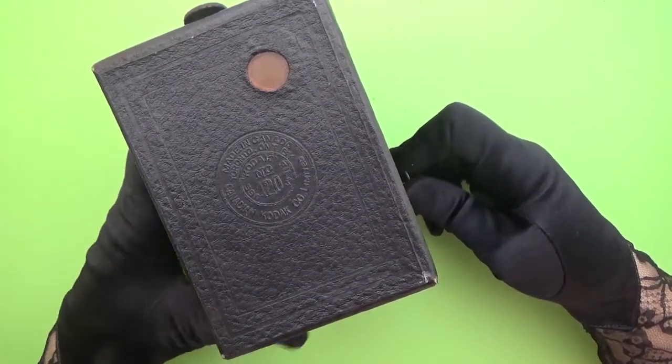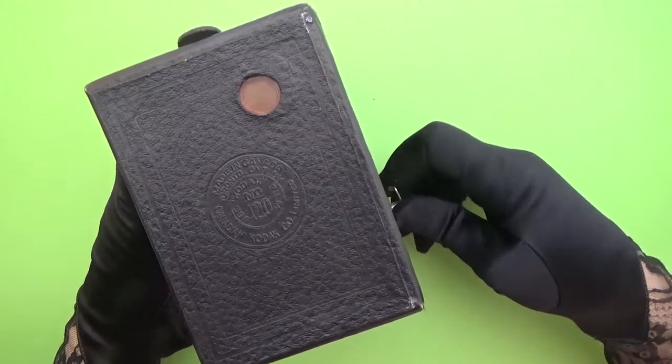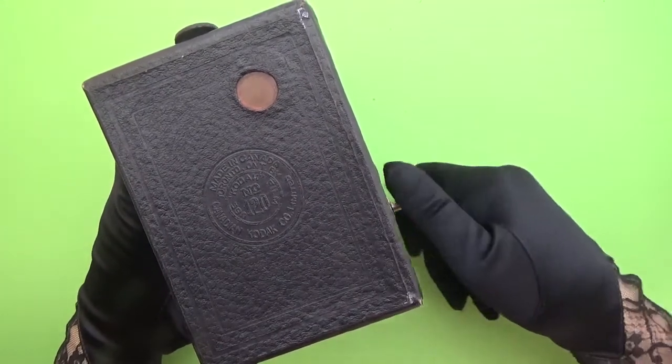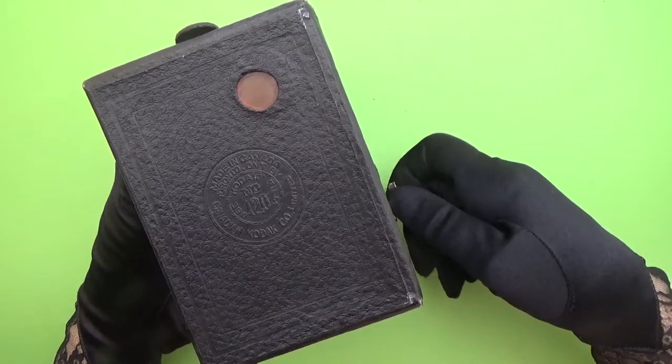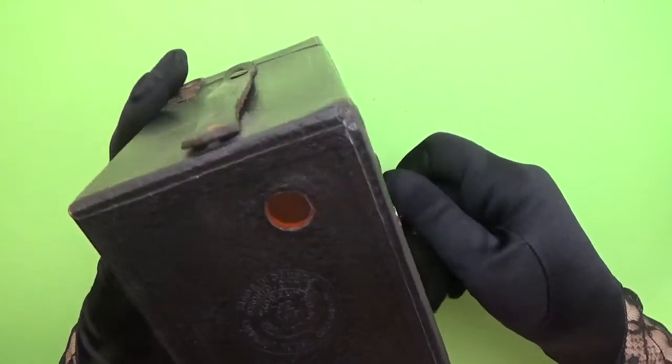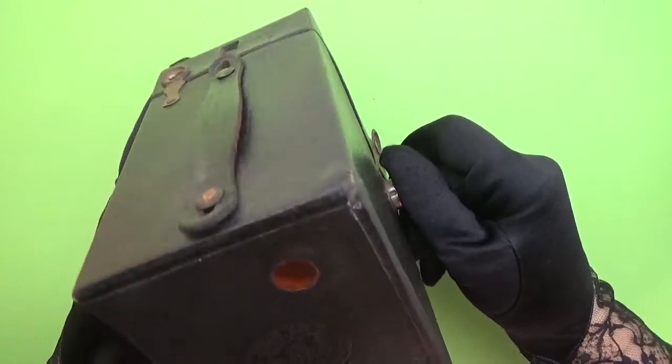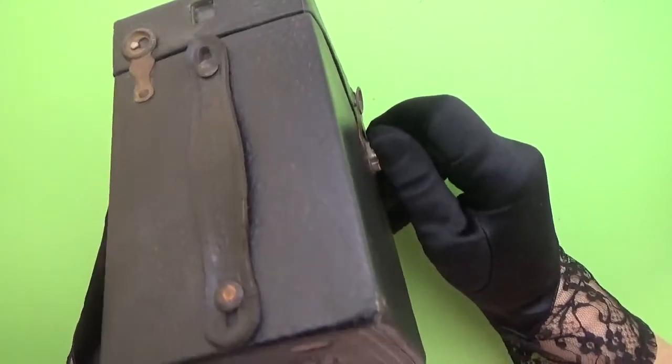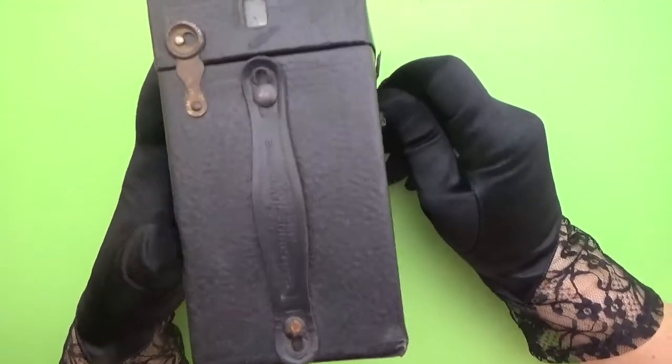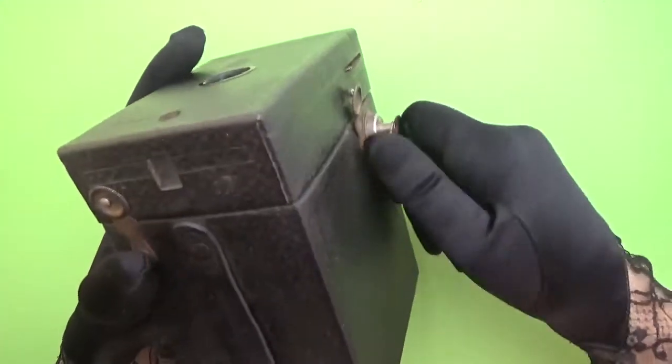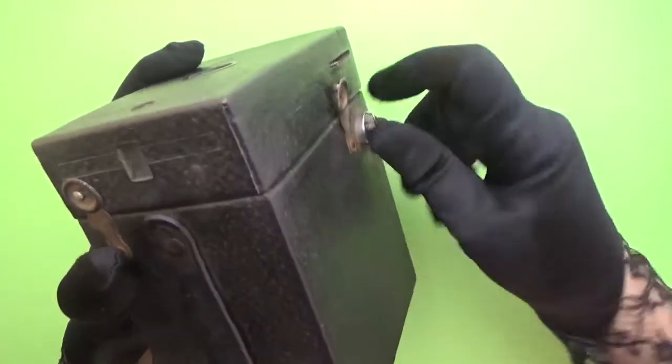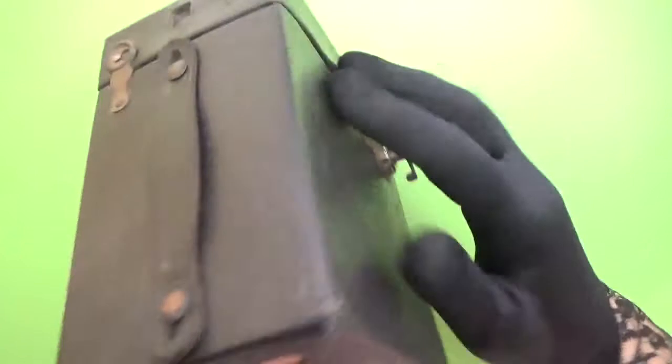If you want to know how to load and unload film on 120 box camera, please check our videos on a Conley camera. After you load your film and you see number one on the back of the window, you are ready to take your first picture.